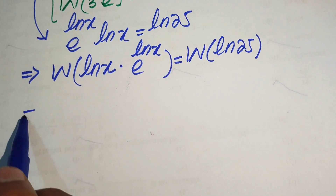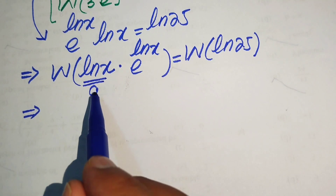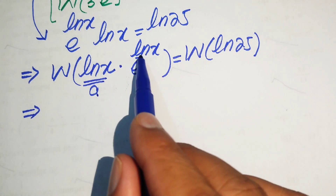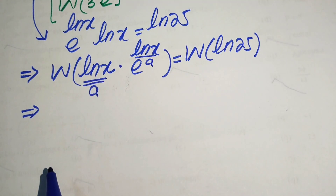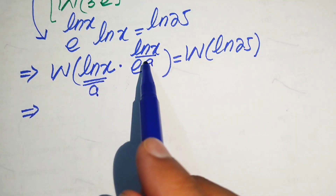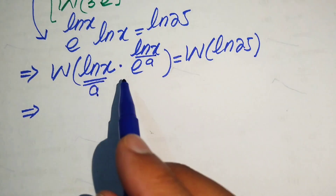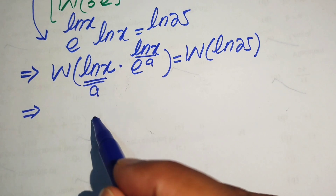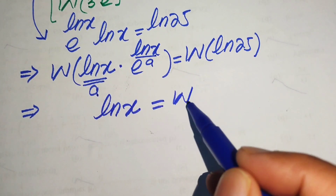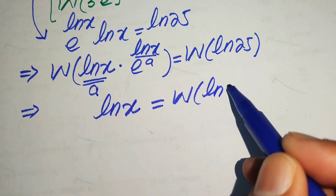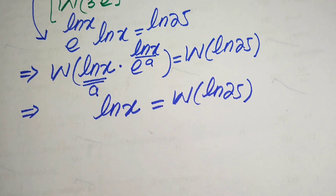Applying the Lambert W function to the left-hand side: since log x plays the role of 'a' in the definition W(a · e^a) = a, the output is simply log x. So we get log x equals W(log 25).